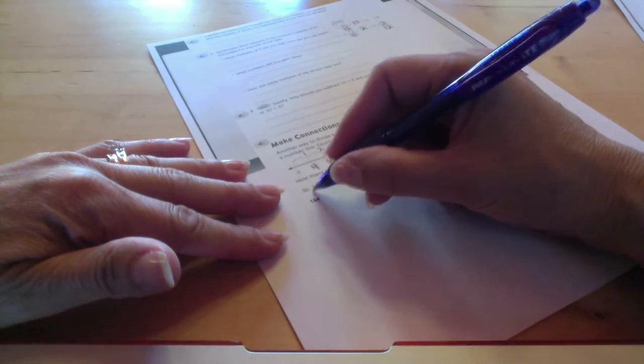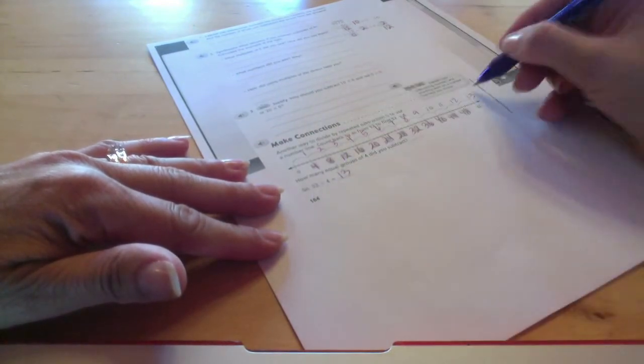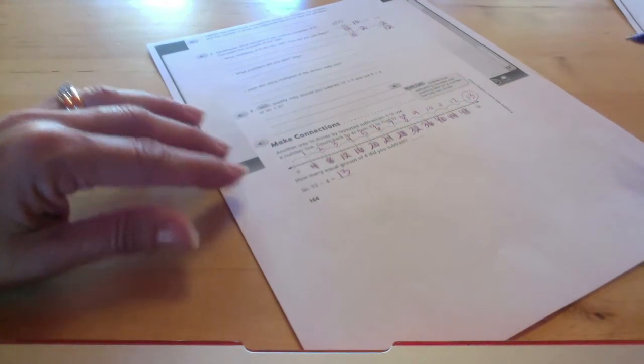So then 30, or 52 divided by four would be 13, because it took us 13 jumps of four to get there.